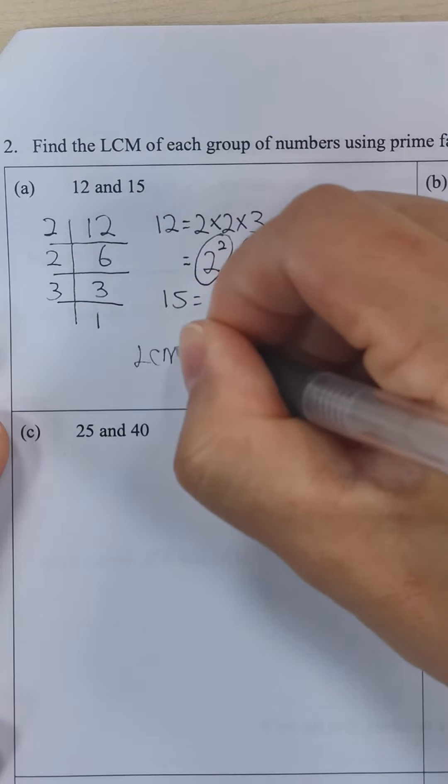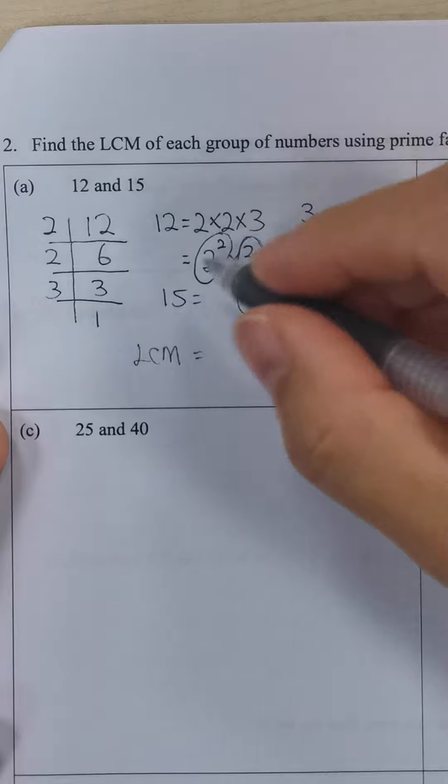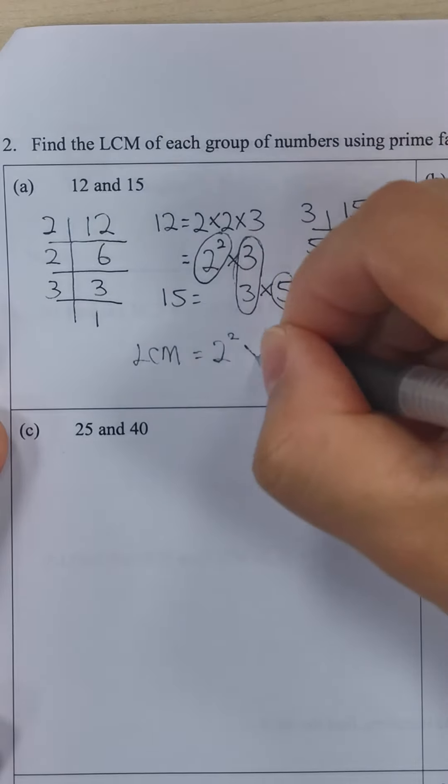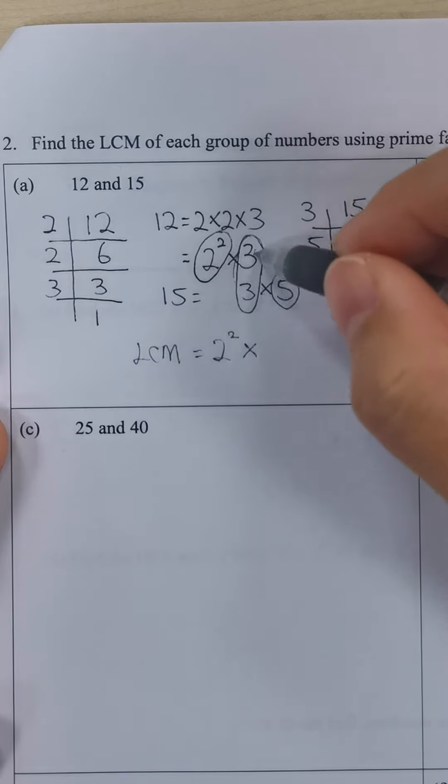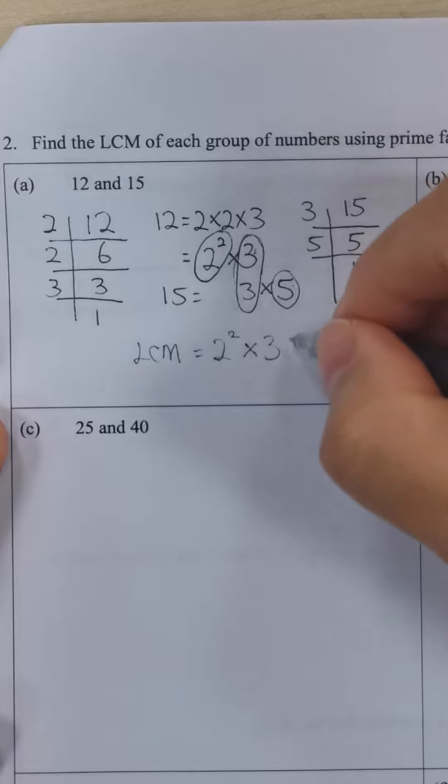To find the LCM, we simply take the ones that we circled. So we have 2 squared, and the 3, and the 5.